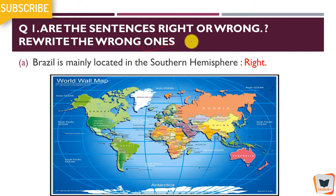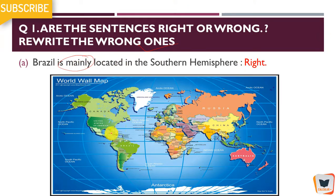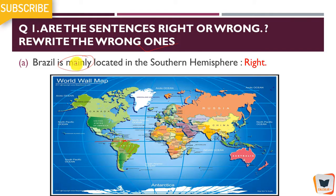So Brazil is mainly located in the southern hemisphere — right? The equator divides the globe, and some part of Brazil is in the Northern Hemisphere while most of the part is in the Southern Hemisphere. The sentence says 'mainly,' not 'completely,' meaning most of Brazil is in the Southern Hemisphere. This is why this sentence is right.